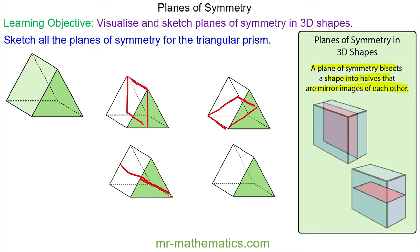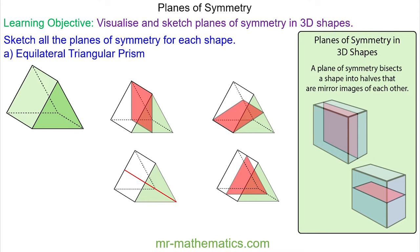The final plane of symmetry would be the line of symmetry on this rectangle. Again, we continue it through the depth. So you can see a triangular prism has four planes of symmetry.